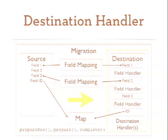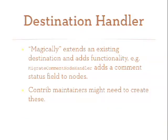There's one other piece — the destination handler — which lets you extend a destination without it having to know about all possible handlers. The obvious example is the comment module, which adds fields to a node that you don't care about if comments aren't enabled. So the node destination doesn't have to care about comments — the comment destination handler takes care of that. This is one of the things that contrib module maintainers might need to create.